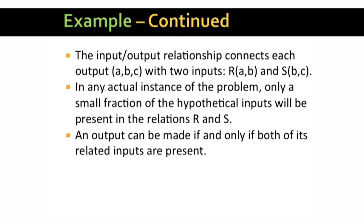So the actual outputs will also be a fraction of the hypothetical outputs. For example, if one-tenth of the possible tuples of R are present and one-tenth of the possible tuples of S are present, then we would expect about one-one-hundredth of the possible outputs to be made. The true number of outputs could be different depending on the particular tuples chosen.